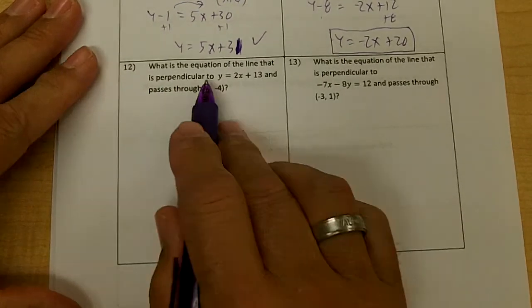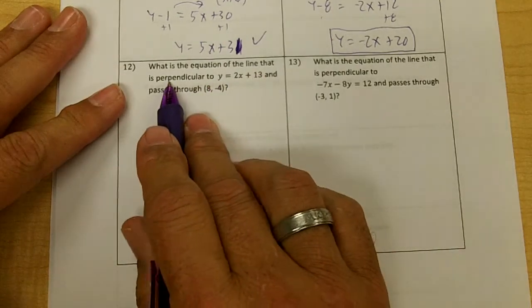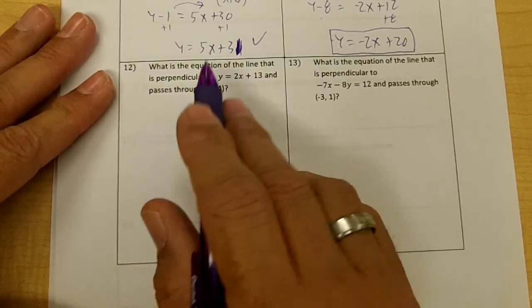Number 12, what is the equation of a line that is perpendicular to y equals 2x plus 13 and passes through (8, -4)?